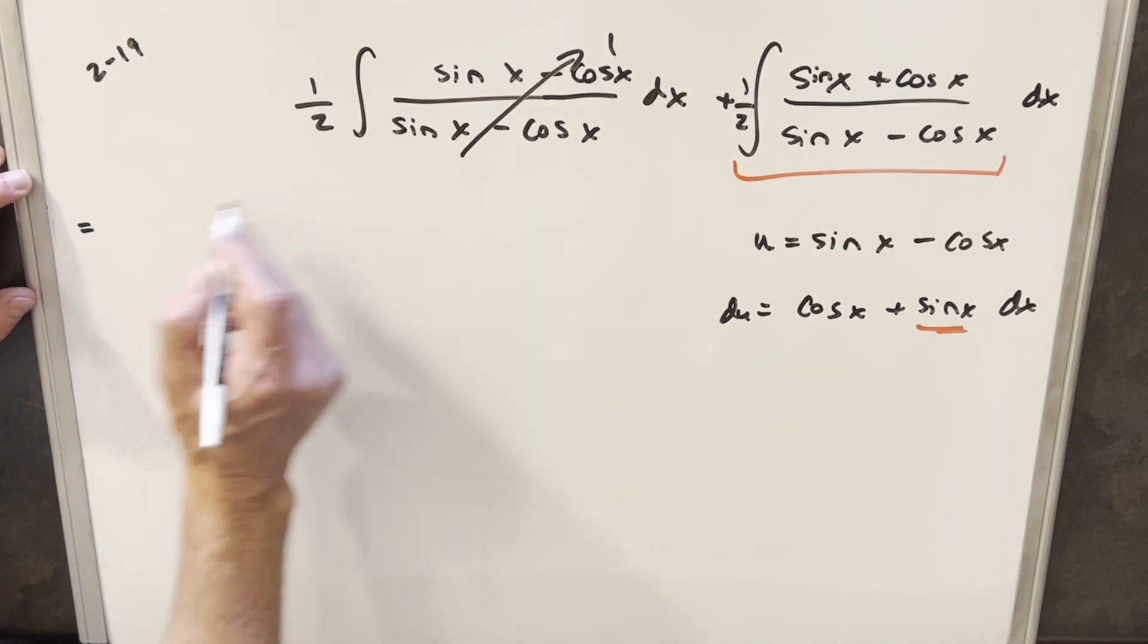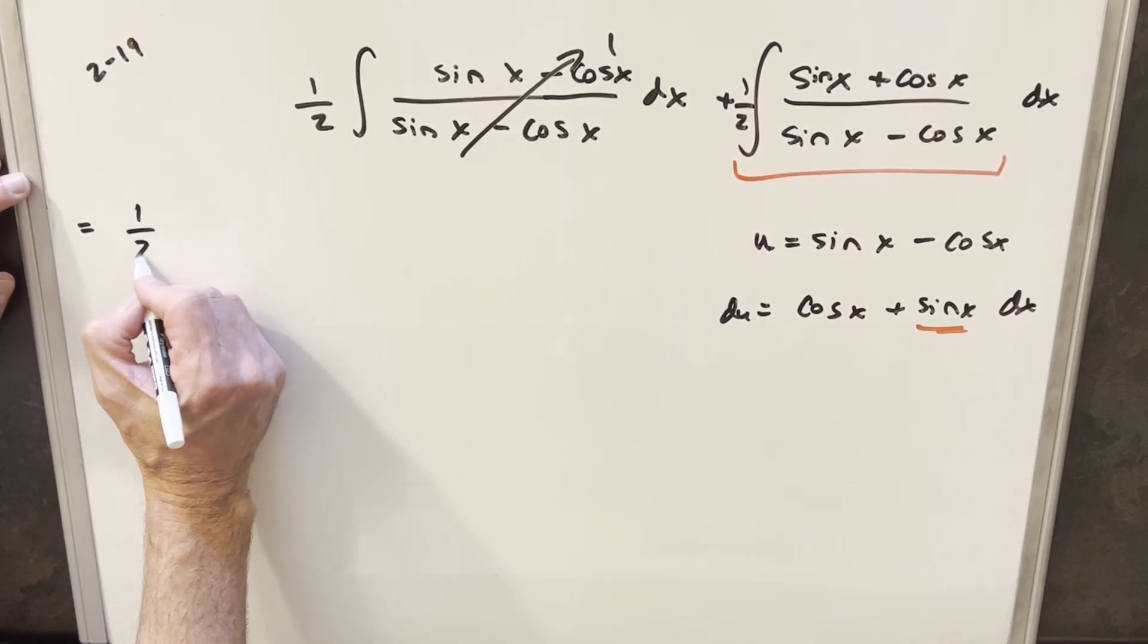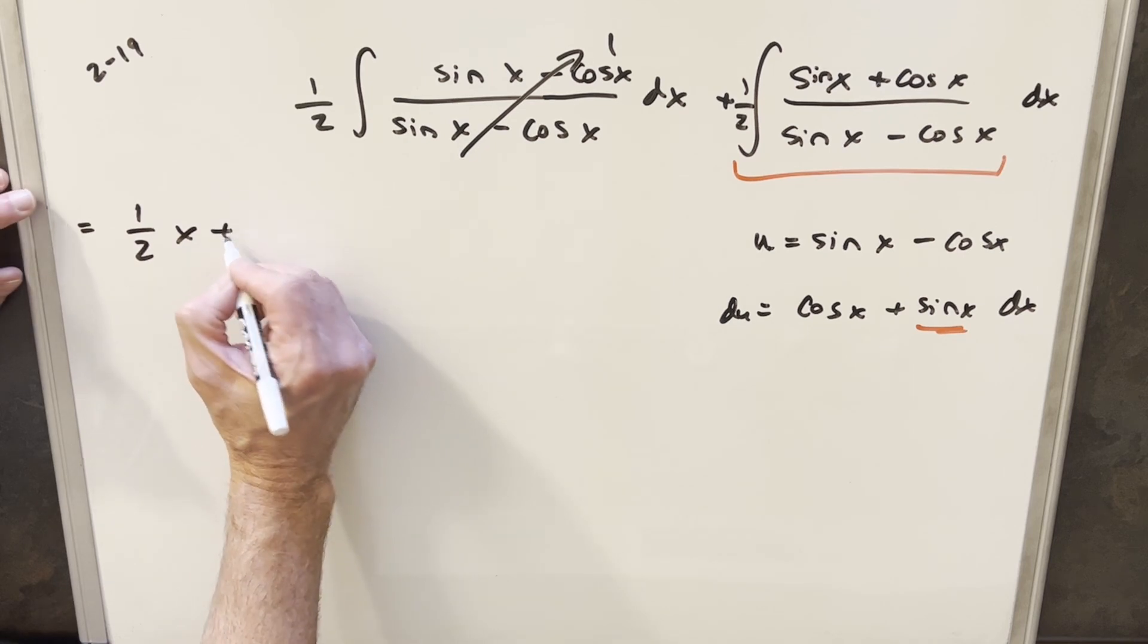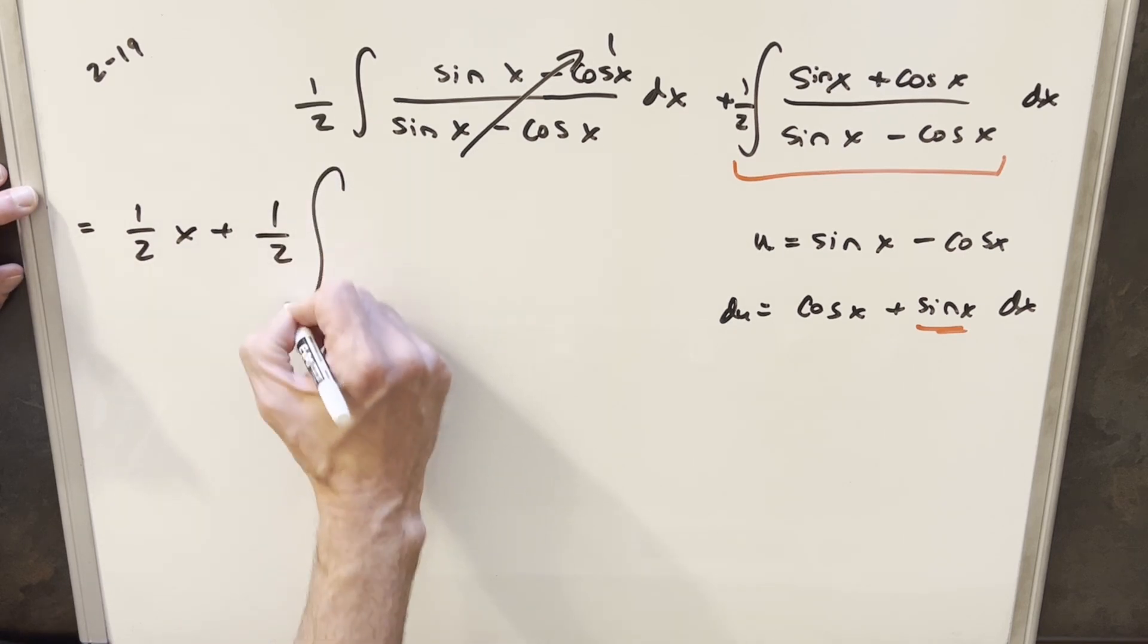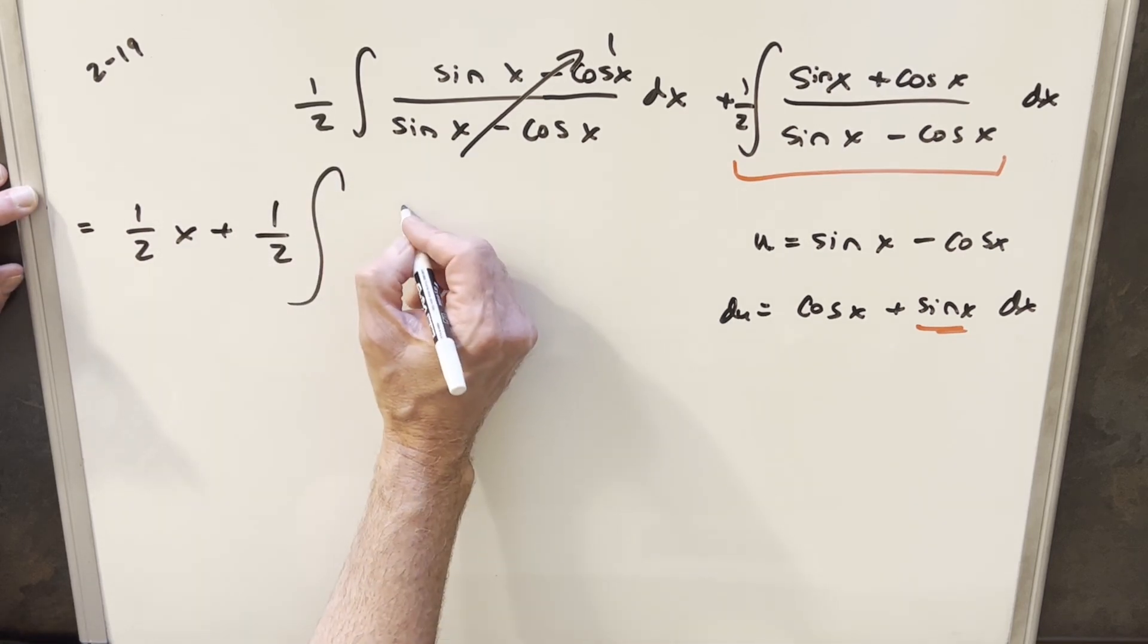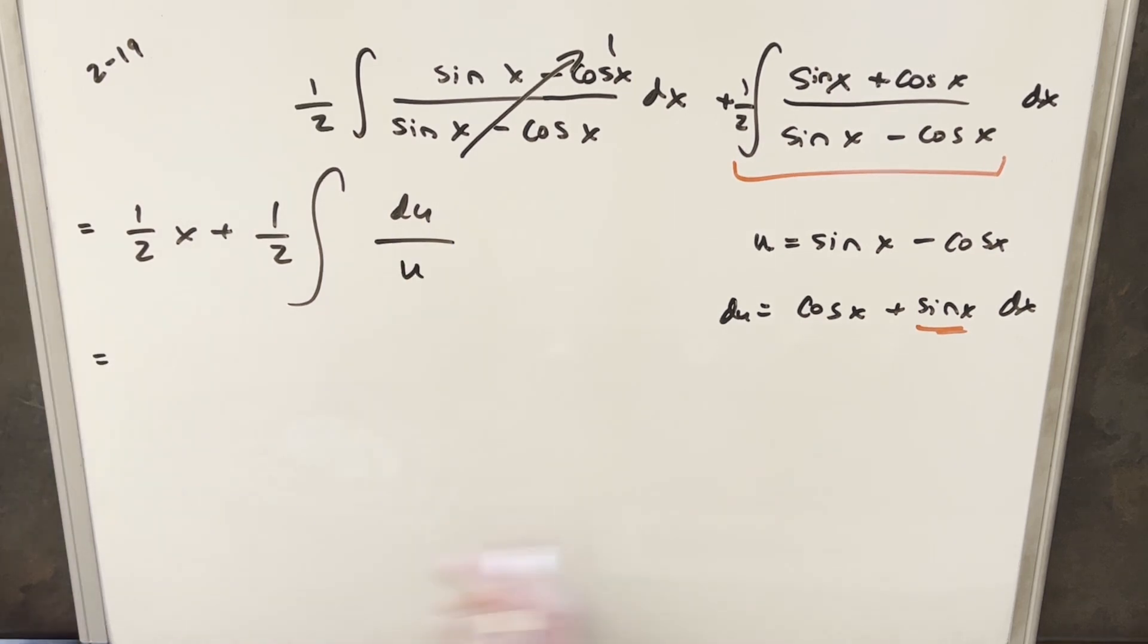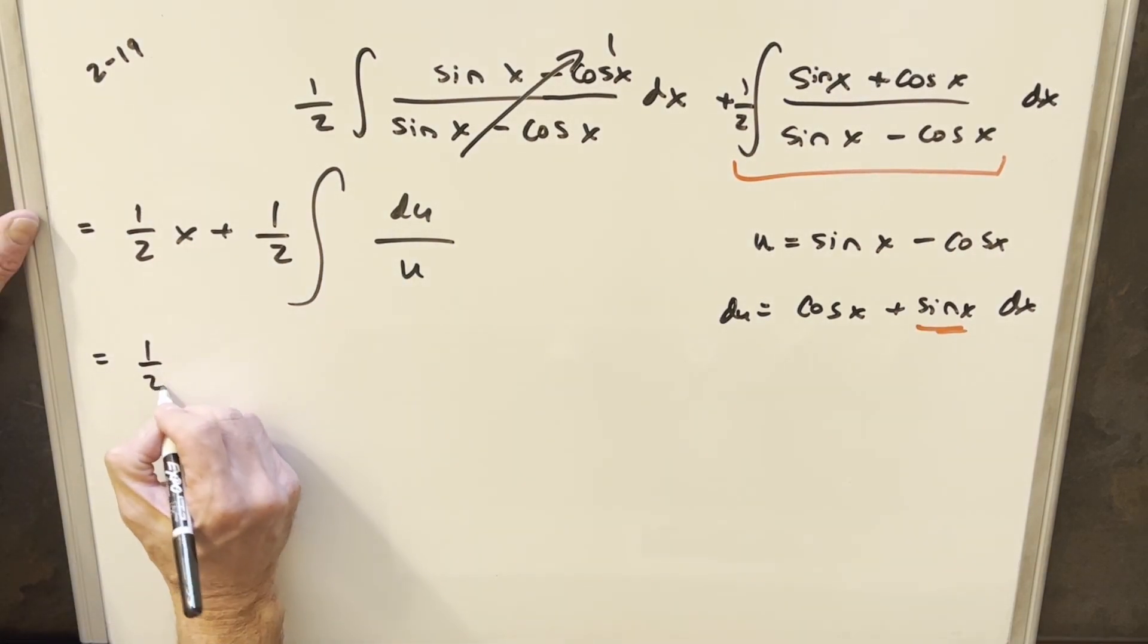So let's go ahead and integrate and do the substitution over here. So for this one, because we're just integrating one, this is going to give me half x here. And then on this one, we're going to do our substitution. But again, the numerator is just du and the denominator is just u. And so now we'll just go ahead and we'll integrate this thing.